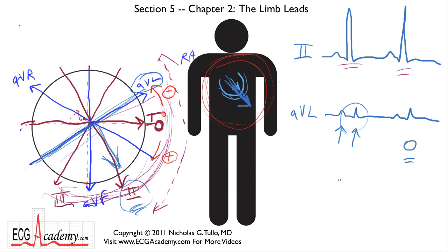So with this discussion of the limb leads, we'll get ready for Chapter 3, which will be a review of the precordial or V-leads and what we look at when we examine those. Then in the next section, we'll start to analyze the QRS complex itself using real tracings and talk about real electrocardiographic diagnoses. This is Dr. Nick with the ECG Academy — thanks for watching.